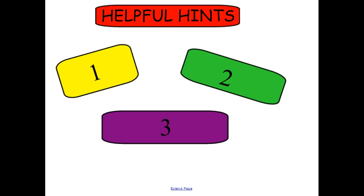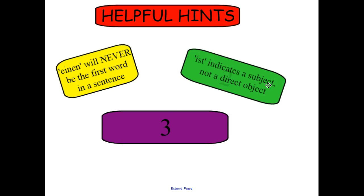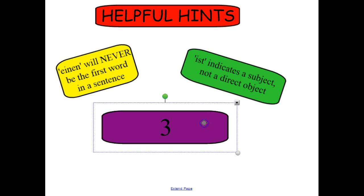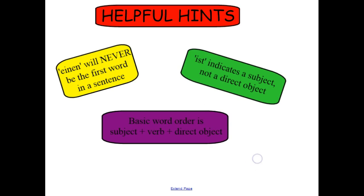A reminder about the helpful hints from the previous lesson: just as 'den' will never be first in the sentence, 'einen' will also never be the first word in a sentence, because we do not put a direct object first. 'Ist,' or the verb 'sein,' indicates a subject, not a direct object. And again, our basic word order is subject plus verb plus direct object.